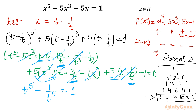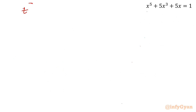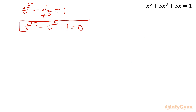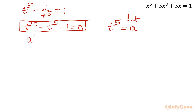This simplified equation t power 5 minus 1 over t power 5 equals 1 is now easy to solve. Multiplying both sides by t power 5 gives t power 10 minus t power 5 minus 1 equal to 0. Now we introduce a second substitution: let t power 5 equal to A. This gives A squared minus A minus 1 equal to 0.